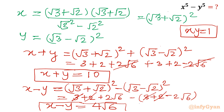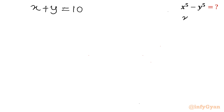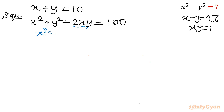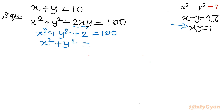Let's use these equations to find x⁵ − y⁵. We have x + y = 10, x − y = 4√6, and xy = 1. Squaring x + y: x² + y² + 2xy = 100. Since xy = 1, this gives x² + y² + 2 = 100, so x² + y² = 98.